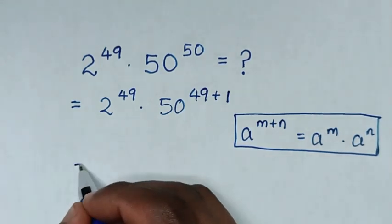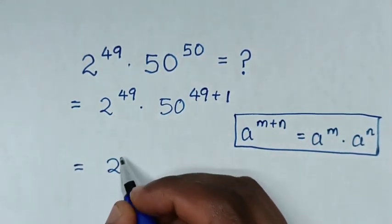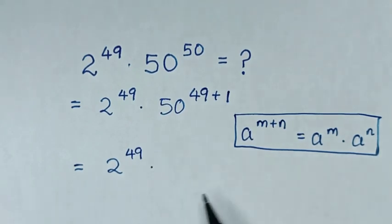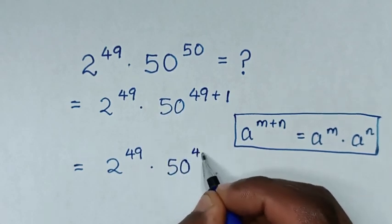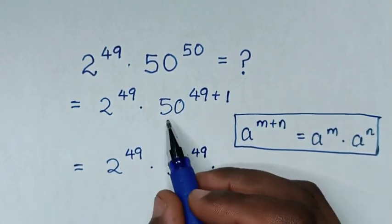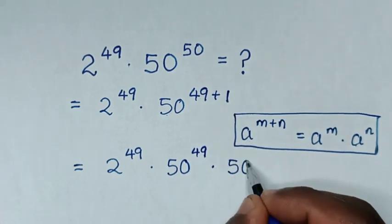So it will be equal to this 2 power of 49 then times it will be multiplication of exponents which is 50 power of 49 then times 50 power of 1 which is same as 50.